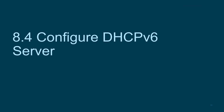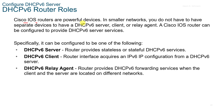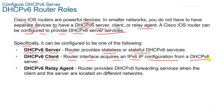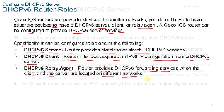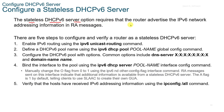8.4 Configuring the DHCPv6 Server. Cisco IOS routers are powerful devices, and in smaller networks you do not need separate devices for DHCPv6 server, client, or relay agent. A Cisco IOS router can be configured as a DHCPv6 server providing stateless or stateful services, as a client where the router interface acquires its V6 IP configuration from another server, or as a DHCPv6 relay agent that forwards services when the client and server are located on different networks. The stateless DHCPv6 server option requires that the router advertise the V6 network addressing information in RA messages.